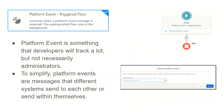Next is platform event-triggered flow. It launches when a platform event message is received, and this auto-launched flow runs in the background. Platform events are messages that different systems send to each other or within themselves. You define the platform event in Setup first, then use that same event in the flow — if that platform event is captured, you define what should happen. In upcoming videos we will cover all Salesforce flow types in detail. If you like this video, please subscribe to the channel. Thank you and have a nice day!